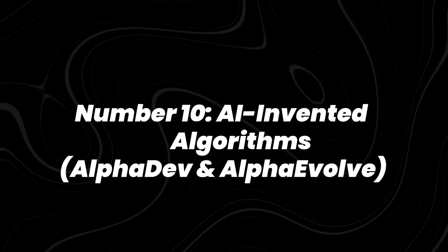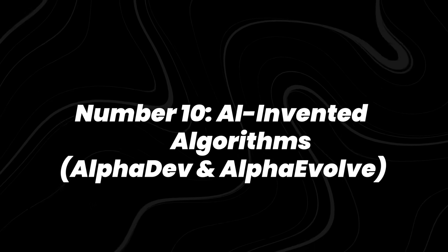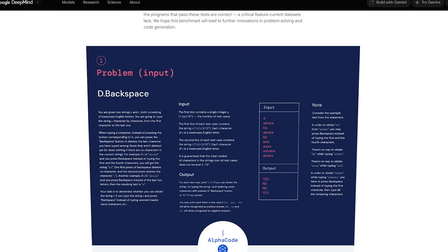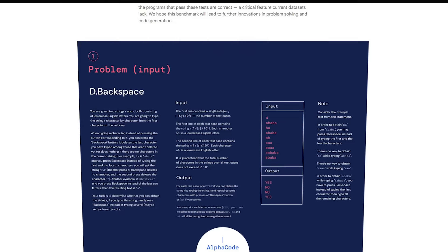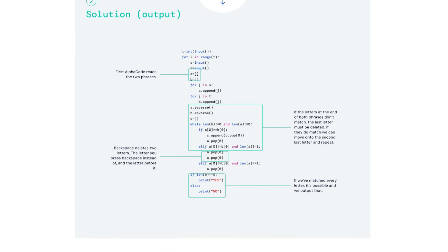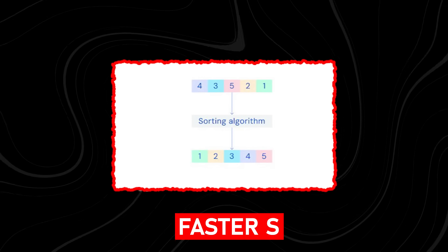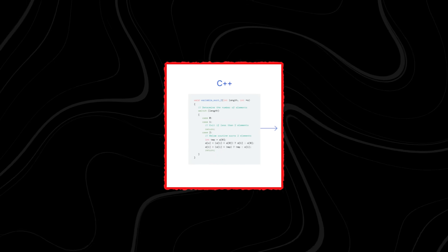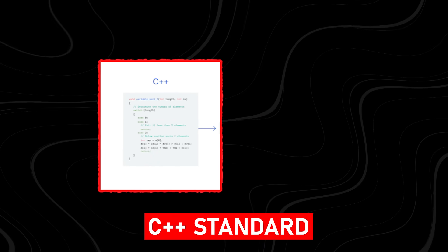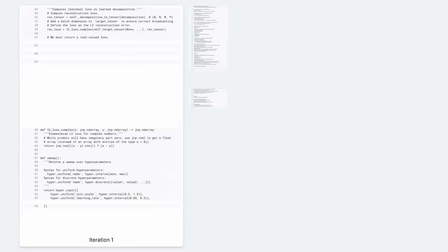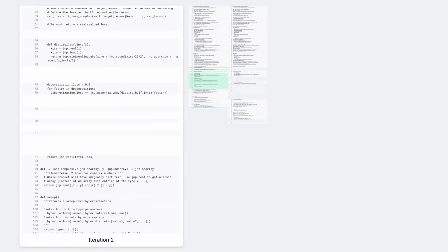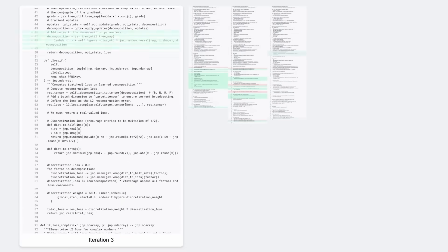Number 10, AI invented algorithms. AlphaDev and AlphaEvolve. AI is not only solving problems, it's creating new solutions. In 2023, DeepMind's AlphaDev discovered a faster sorting algorithm, later adopted into the official C++ standard library. It's the first time an AI-created algorithm has entered such a core computing system.